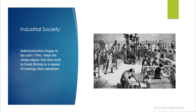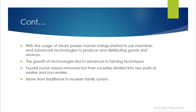Industrial society: industrialization began in the mid-1700s when the steam engine was first used in Great Britain as a means of running other machines. With the usage of steam power, human beings started to use machines and advanced technologies to produce and distribute goods. The growth of technology led to advanced farming techniques. Society became divided into two parts: worker and non-worker. There was a move from the traditional to the modern system.